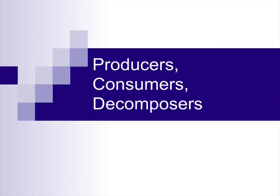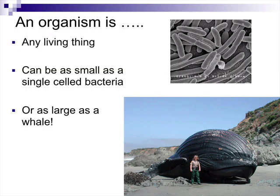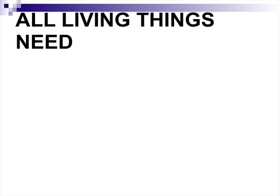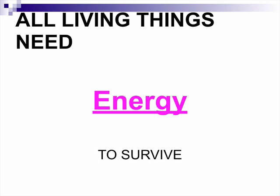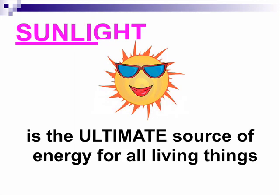Let's take a look at these three types. First of all, an organism can be any living thing — something as small as bacteria that you could only see with a microscope, or something as large as a whale. But all living things need energy to survive, just like a car needs gasoline. Ultimately, sunlight is the ultimate source of energy for all living things on Earth.